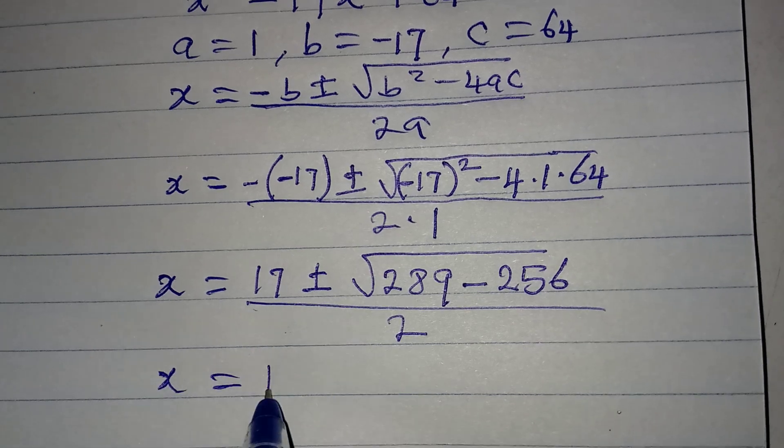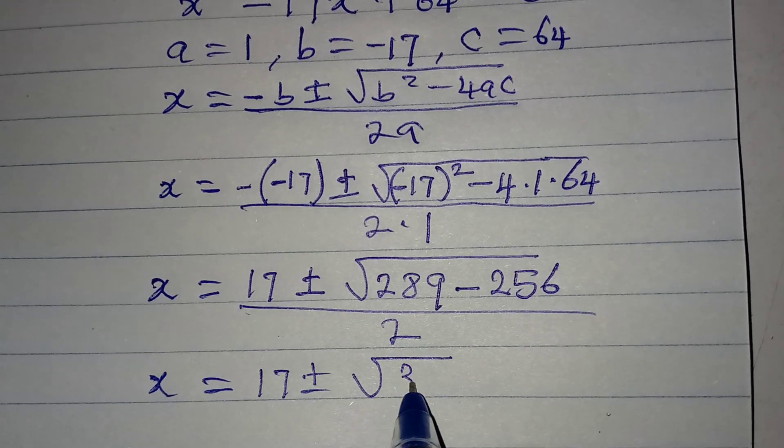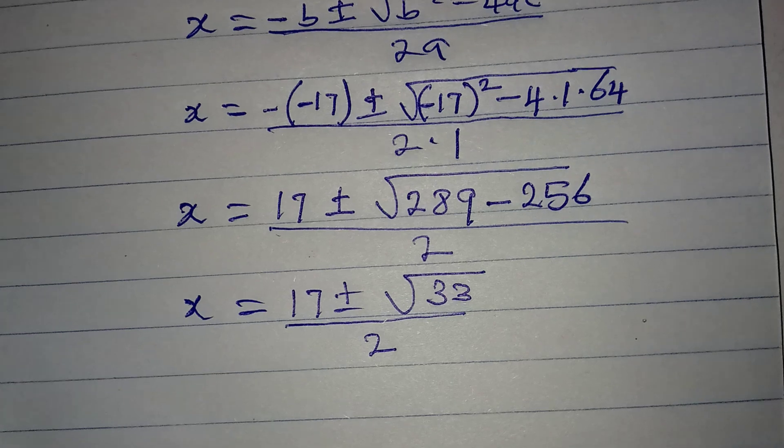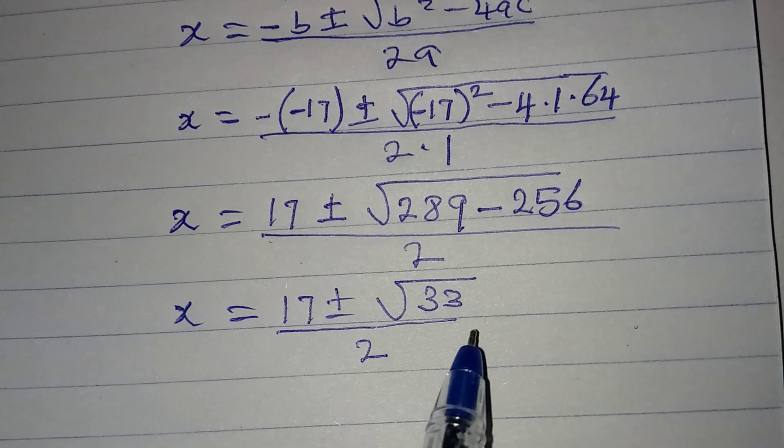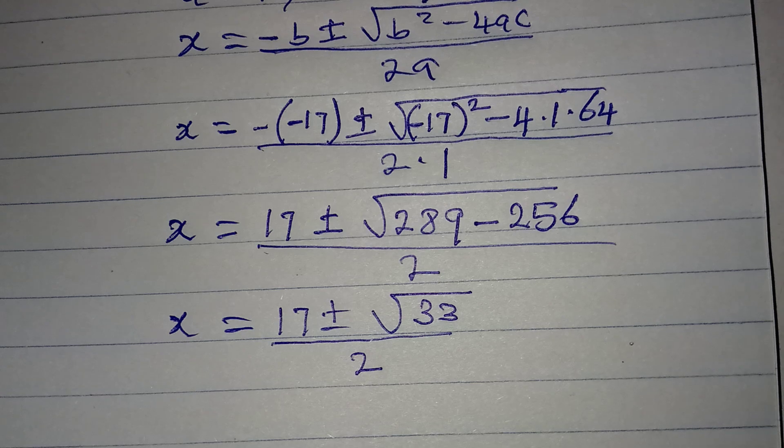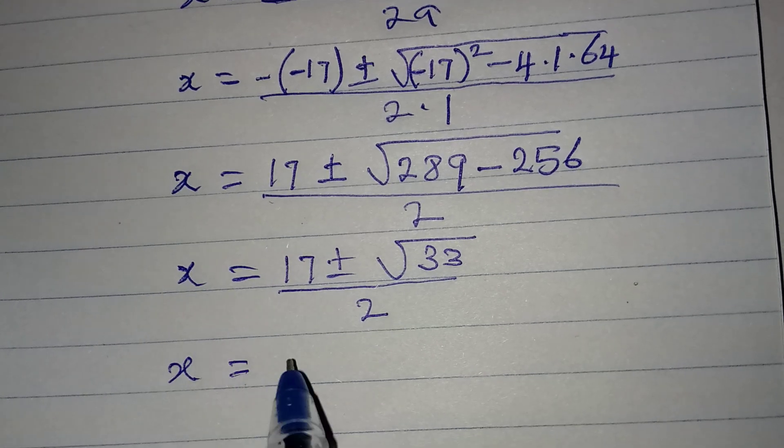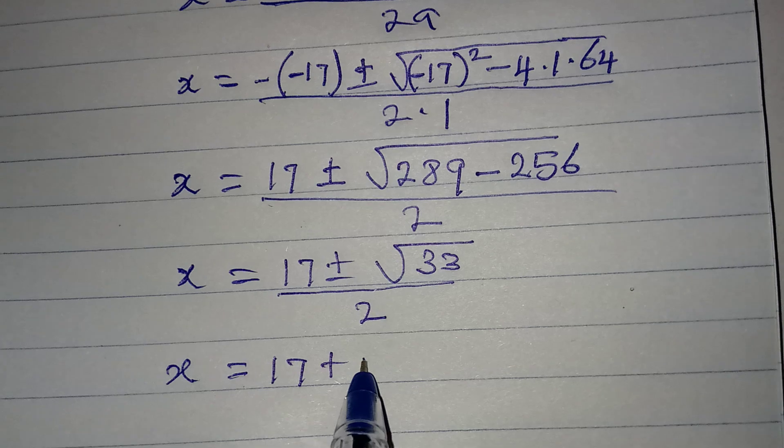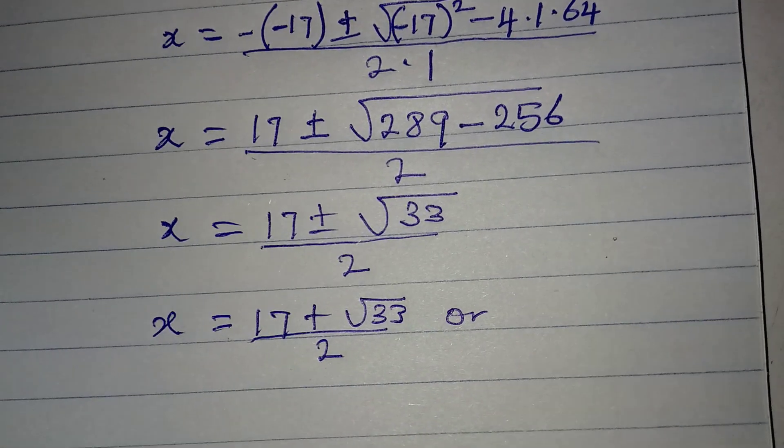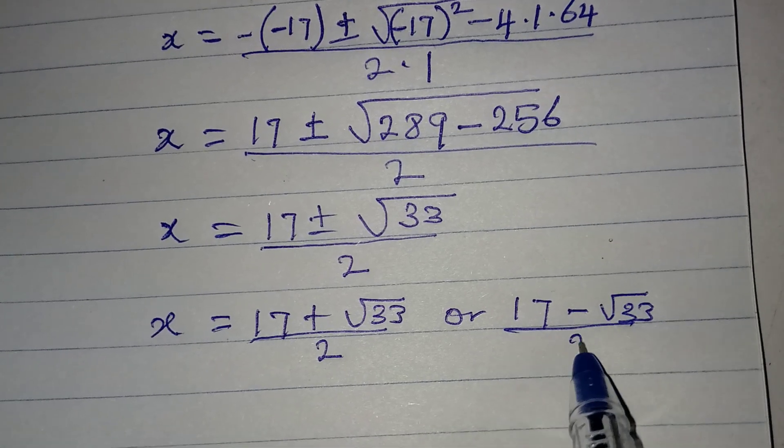Now let us continue. x will be equal to 17 plus or minus, if you subtract this, you will have 33, and then here we have 2. Now can we simplify root of 33 any further? 33 is 3 times 11, and both of them are not perfect squares. Now let us continue from here, x is now equal to 17 plus square root of 33 over 2, or we have 17 minus square root of 33 over 2.